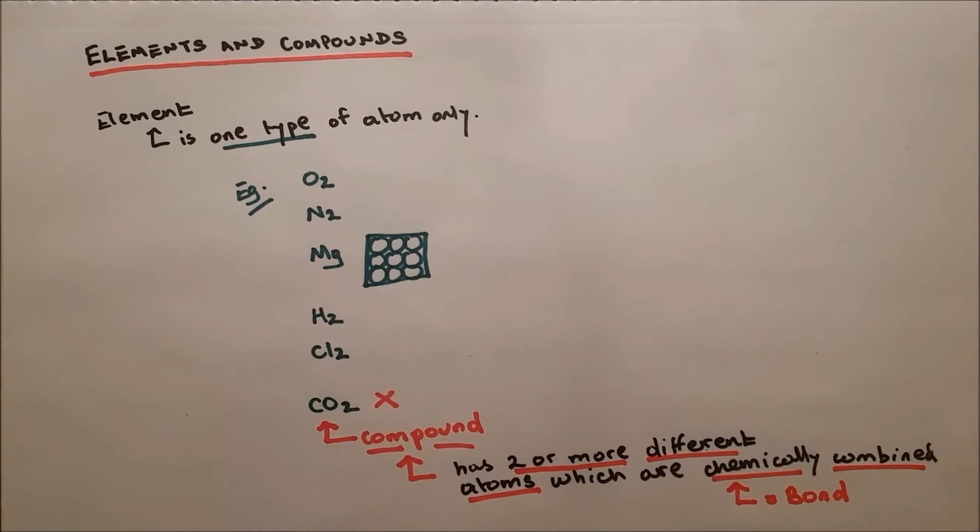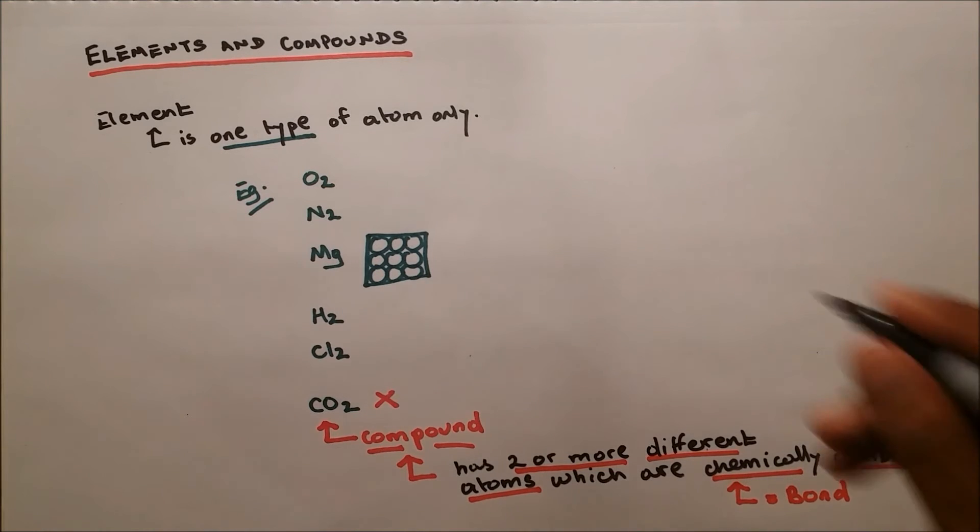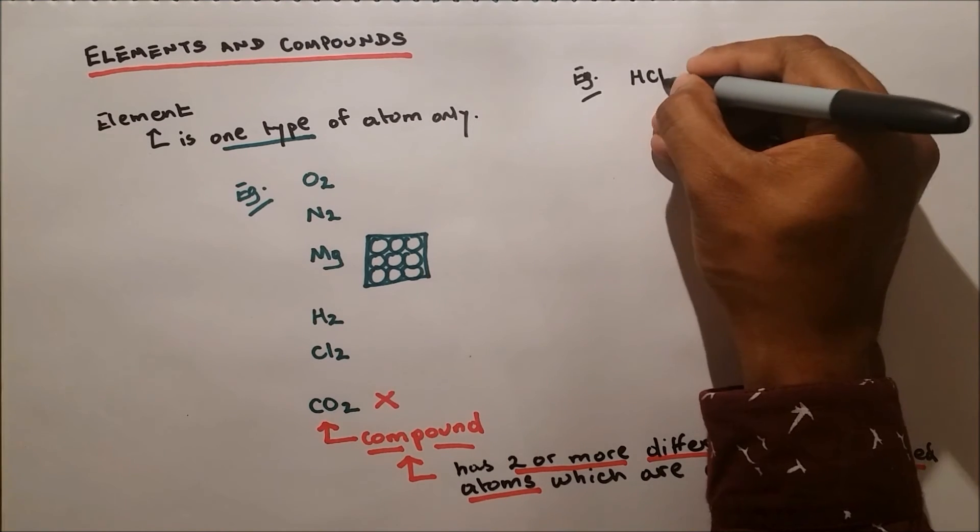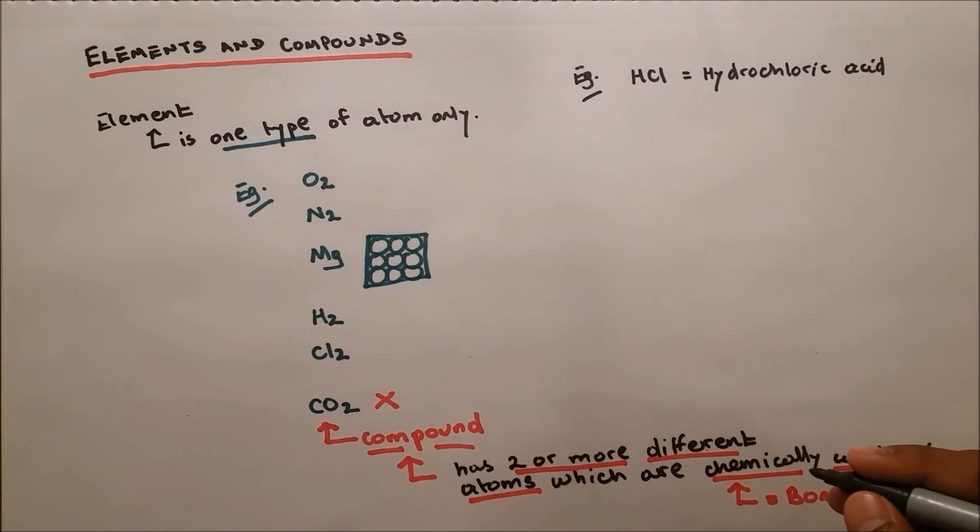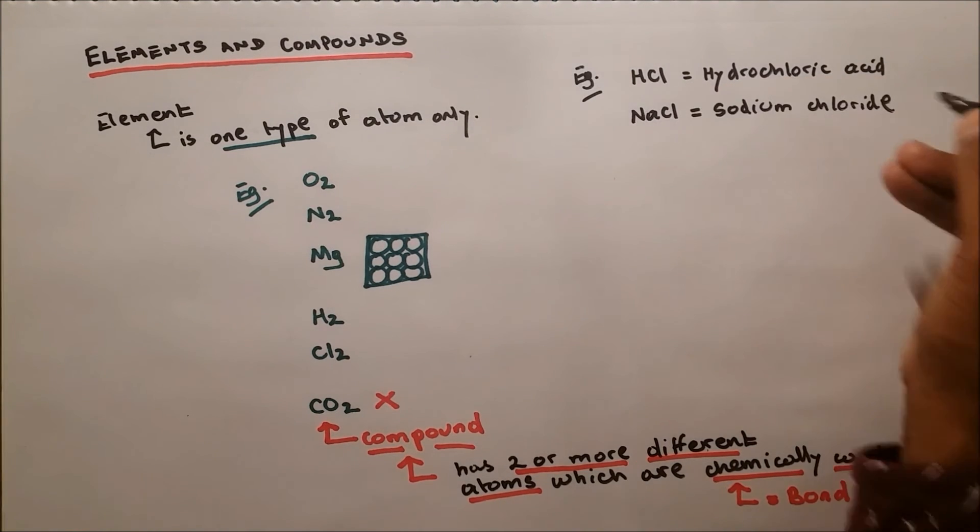A couple of examples of compounds would be HCl which is hydrochloric acid, NaCl which is sodium chloride, CaCO3 calcium carbonate. So all these represent compounds.